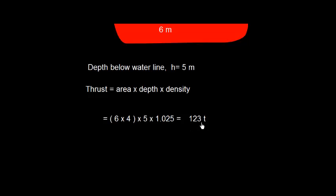We get 123 ton. We can convert it into kilonewton also. We know that 1 ton is 9.81 kilonewton. So, the value in kilonewton is going to be 123 multiplied by 9.81, which is 1206.63 kilonewton.